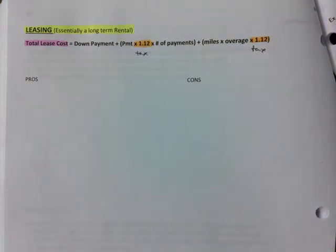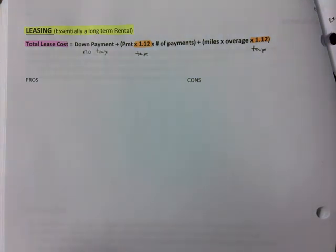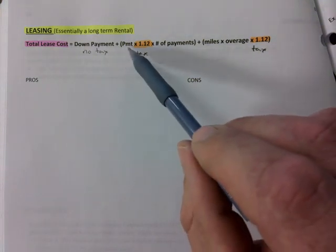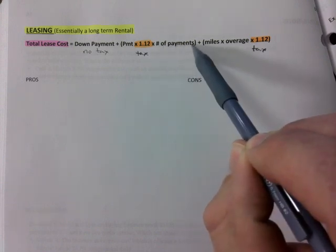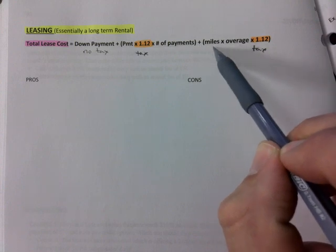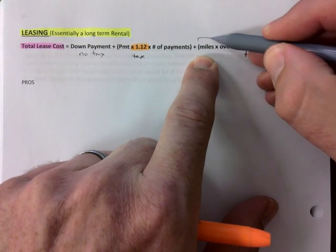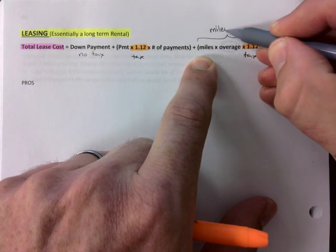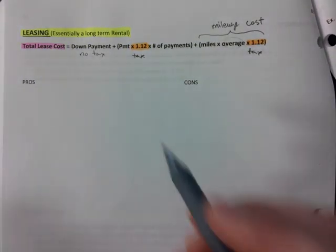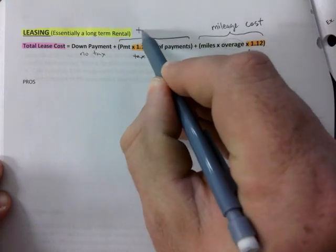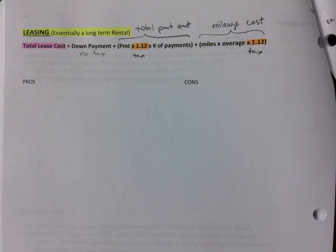You should know that taxes are being added. Notice that the down payment has no tax - if you're making a down payment that doesn't get taxed. It's just the payment amount times 1.12, so this is basically adding taxes to your payment, then you multiply it by the number of payments in that term that you're signing for. Then we would add miles and overage. This is the mileage cost. This part here would be total payment amount, and that chunk represents all the payments that you will have made over the term of your contract.